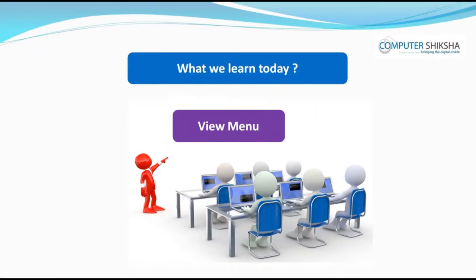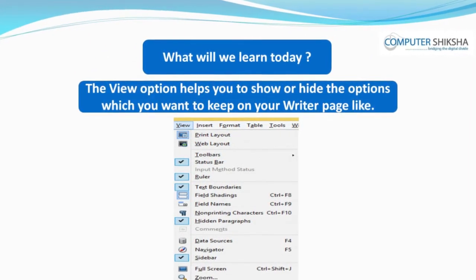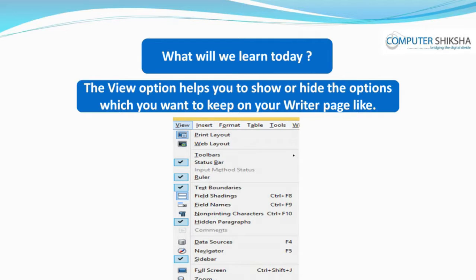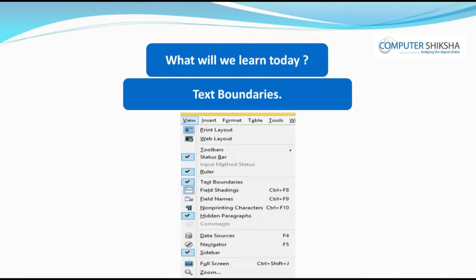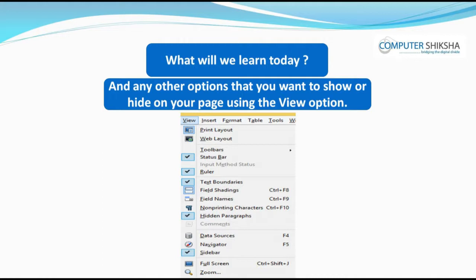In today's class, you will learn about the View submenu. The View option helps you to show or hide the options which you want to keep on your Writer page, like Text Boundaries, Ruler, Status Bar, Formatting Toolbar, Drawing, and any other options that you want to show or hide on your page using the View option.